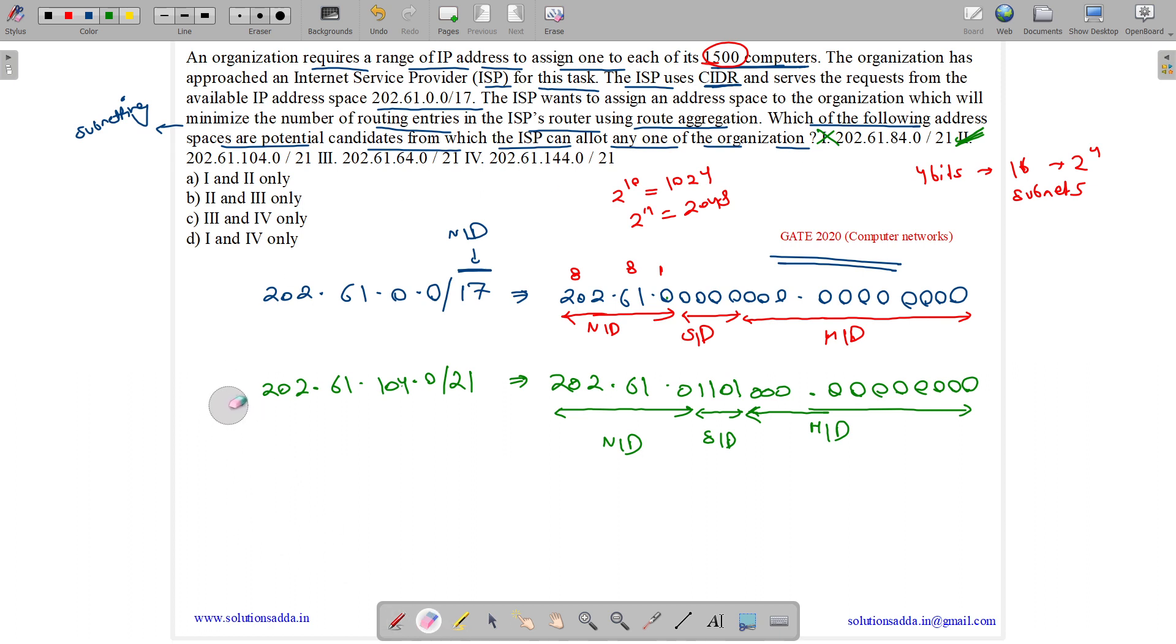So third one is 202.61.64/21. Now writing its binary equivalent we get 64 as 00100000. So these till here is our host ID. These four are our subnet ID. Host ID is all zeros. Subnet ID is in the range. And network ID is matching. So option C can also be a possible answer.